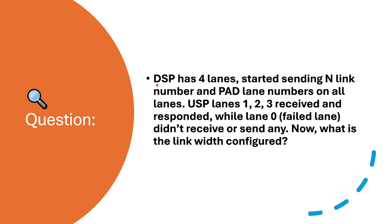The downstream port has four lanes and started sending N link number and paired lane numbers on all the lanes. Our root port also has four lanes and started sending N link number and paired lane numbers on all the lanes. Upstream port lanes 1, 2, 3 received and responded, while lane 0 didn't receive or send any training sequence. Now, what is the link width configured?